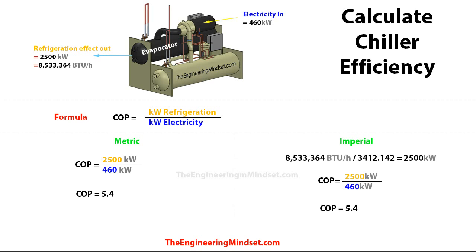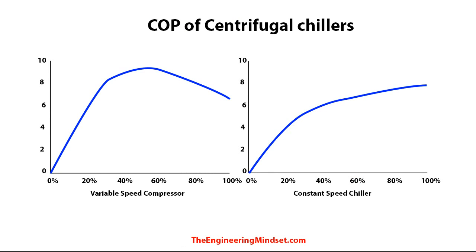A COP of 5.4 is very good. What this means is that for every one kilowatt of electricity that you put in, you will get 5.4 kilowatts of cooling out — so you get five times your money's worth of electricity out in cooling. The COP of a chiller will actually vary throughout the amount of load that's placed on it, so throughout the year and throughout the day as well, unless you've got a constant load.